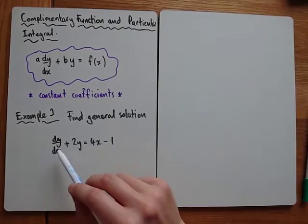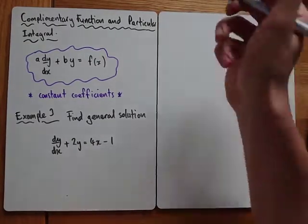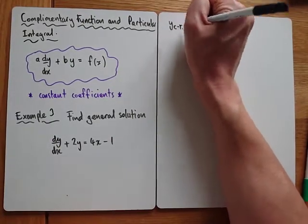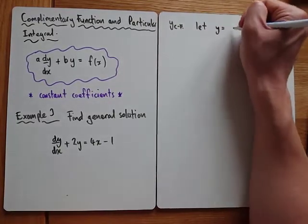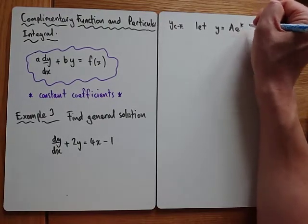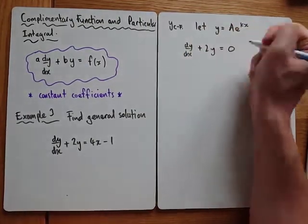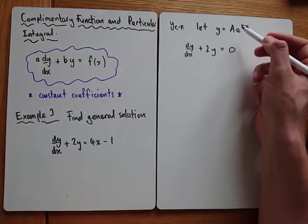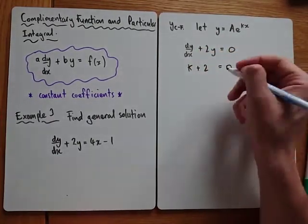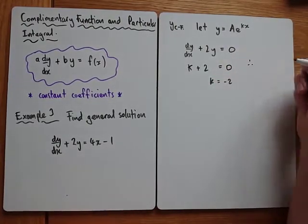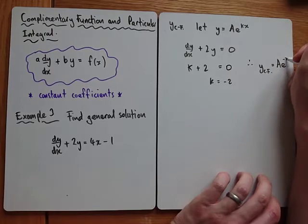Example three: find the general solution. We've got dy/dx plus 2y, and on the right hand side a polynomial, 4x minus 1. Let's get our complementary function quickly. Let y equal some exponential — we're trying to solve dy/dx plus 2y equals zero. You can differentiate and substitute, but you can skip straight to: taking out common factors gives k plus 2 equals zero, so k equals minus 2. Therefore y_CF equals A e to the minus 2x.